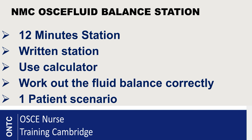Your fluid balance chart station in the NMC OSCE exam is a written station — you do not have to verbalize anything. You can use a calculator provided at the exam center. You are given a patient scenario sheet showing what your patient had to drink in the last 24 hours, any IV fluids, and their urine output for 24 hours. You need to transfer that information correctly onto the fluid balance chart and work out the balance.